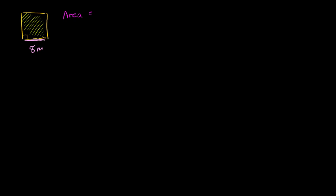The area is literally how much space you're filling up, and it's very easy to figure out for a square. It's literally going to be your base times your height, and this is true for any rectangle. But since this is a square, your base and your height are going to be the same number. So the area is going to be 8 meters times 8 meters, which equals 64. And then meters times meters gives you 64 meters squared.